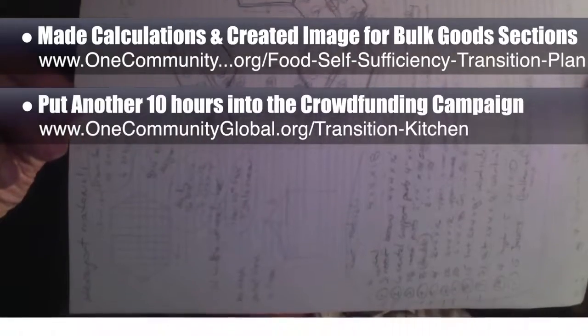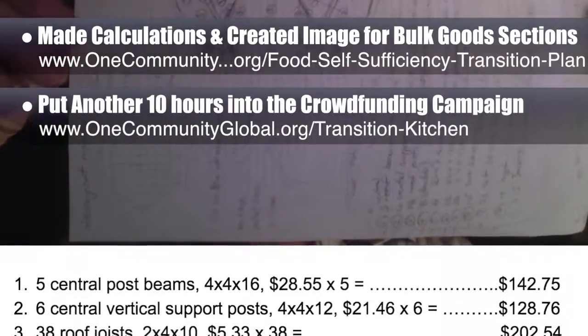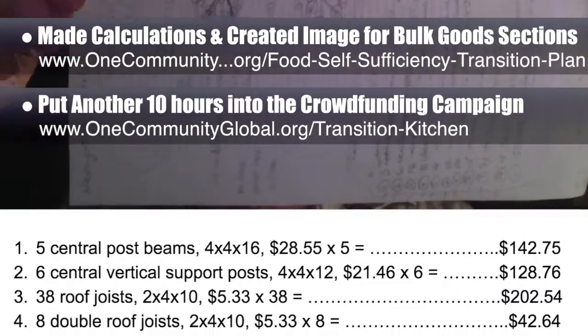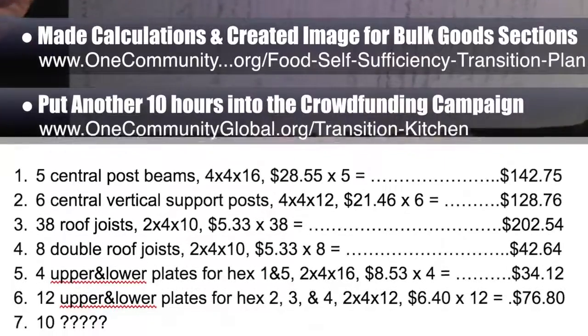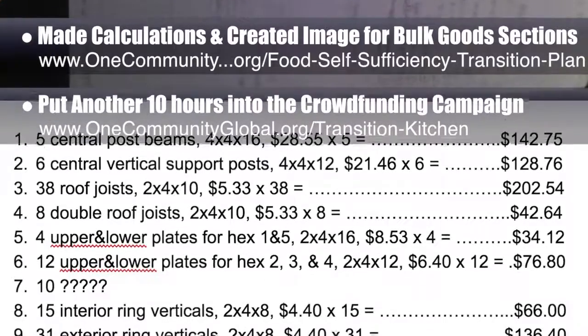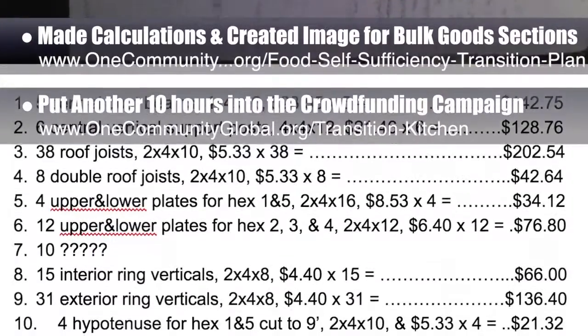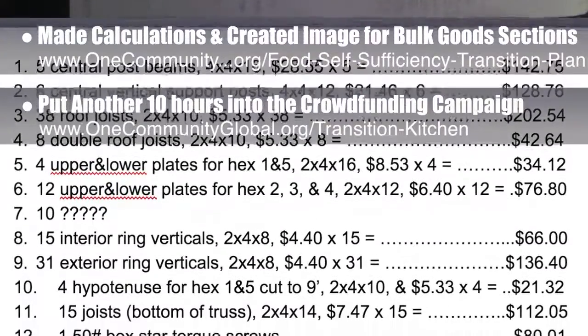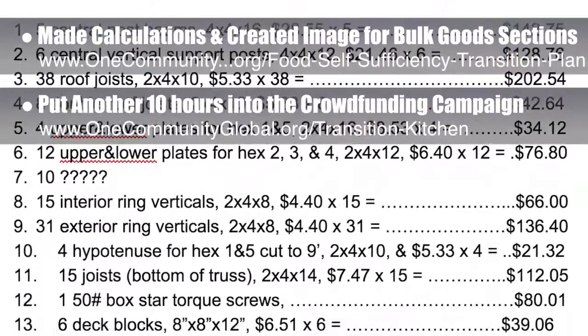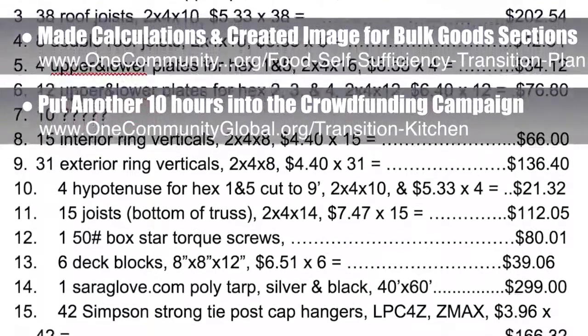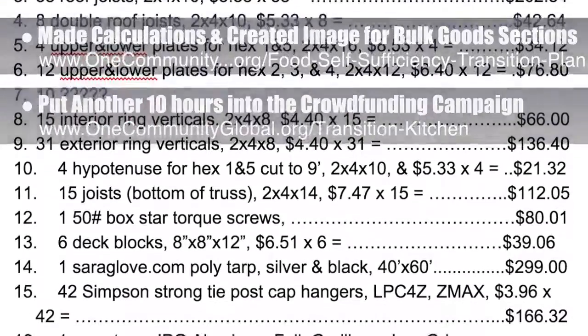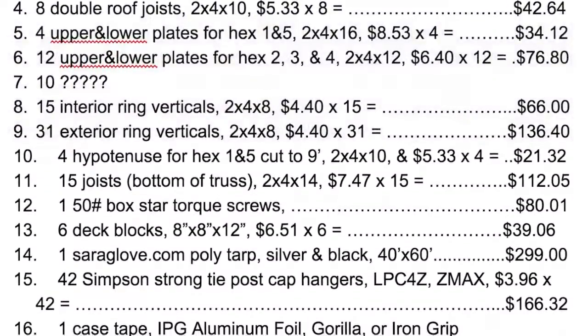This week's focus for the crowdfunding campaign was on the header framing materials, watershed, coated torque screws, tarp, and deck block for the transition kitchen structure. We also researched the joist hangers, tarps, and LED string lights.